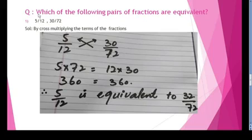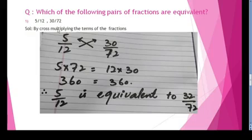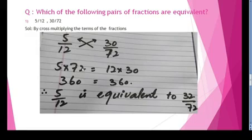Now I have a question: which of the following pairs of fractions are equivalent? The pair is 5 by 12 and 30 by 72. We will check by cross-multiplying the terms of the fractions. So we multiply 5 by 72 and 12 by 30.